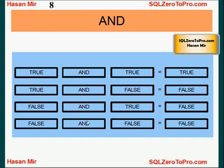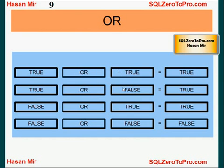True AND false is false, false AND true is false, false AND false is false — it's a common sense thing. The AND operator does not like false: if false comes into the picture the result is false; both sides must be true for the result to be true. Now let's talk about the OR operator — OR is kind of forgiving.